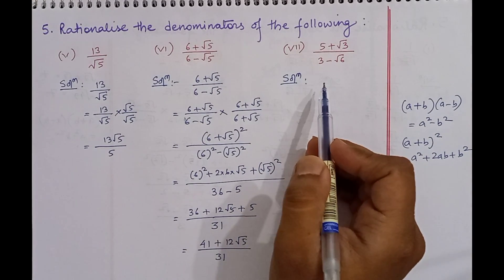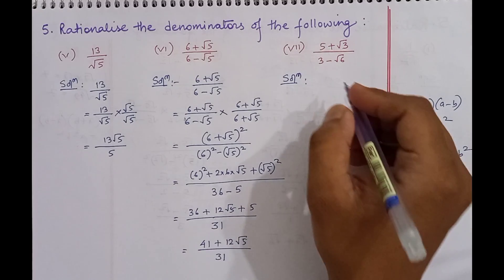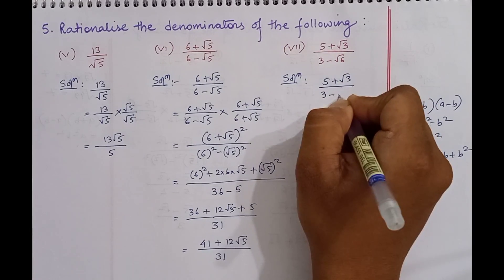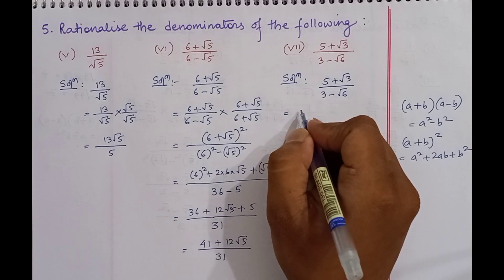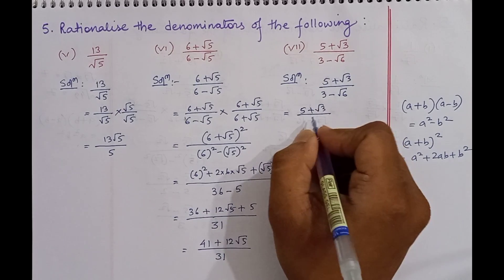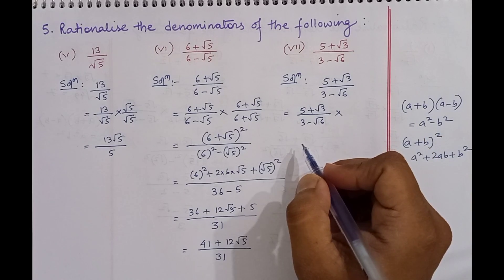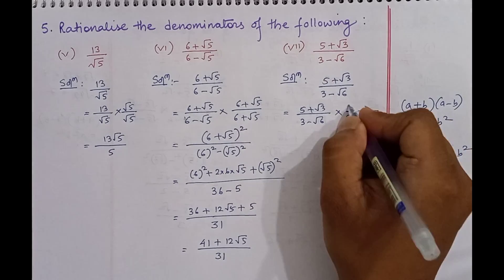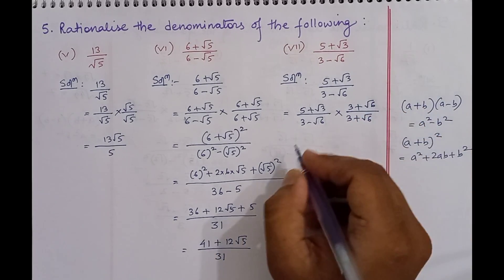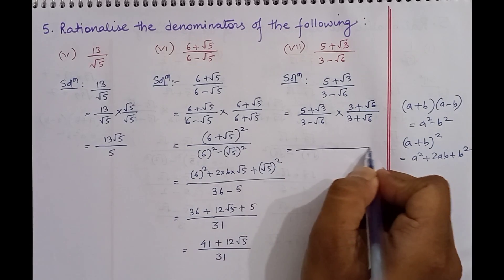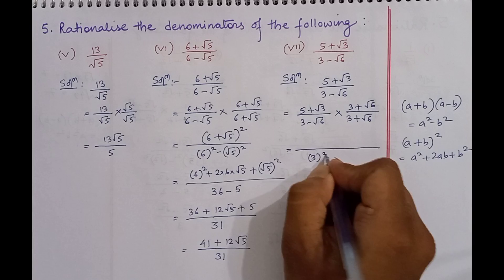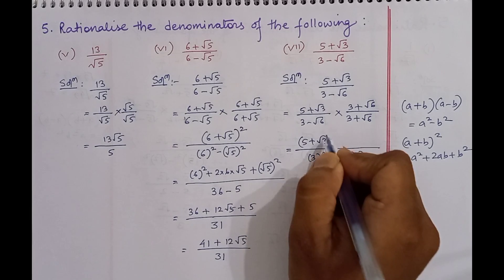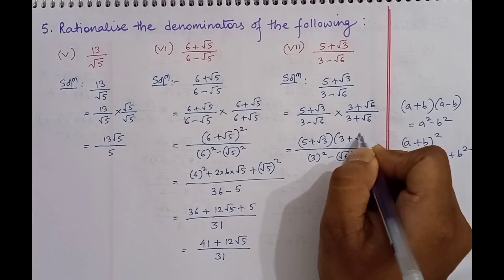Question number 7: 5 plus root over 3 by 3 minus root over 6. As the denominator is 3 minus root over 6, we will multiply it by 3 plus root over 6 over 3 plus root over 6. So the denominator becomes 3 square minus root over 6 whole square, and the numerator will be 5 plus root over 3 into 3 plus root over 6.